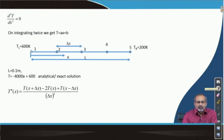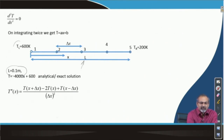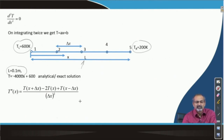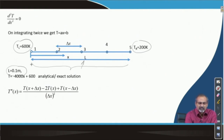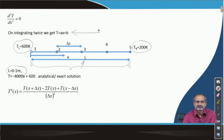Let us look at the domain we have set. Here is a one-dimensional domain of length L set equal to 0.1 meter, with a left-end temperature equal to 600 Kelvin and a right-end temperature of 200 Kelvin. We want to find out, using a finite difference approximation, how temperature varies in the intermediate domain. We have a convenient situation: an exact solution to the problem. If you integrate twice, you get the temperature expressed in terms of two arbitrary constants.